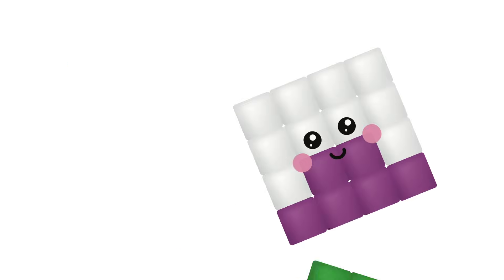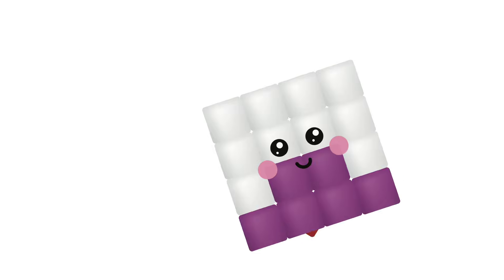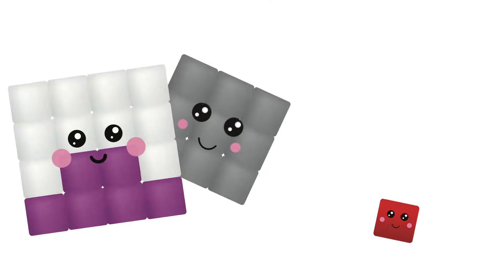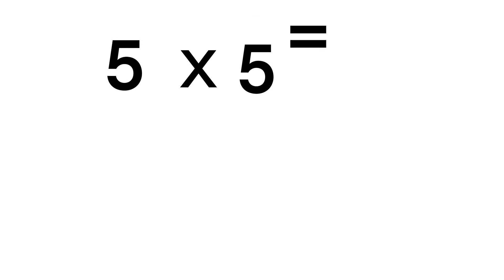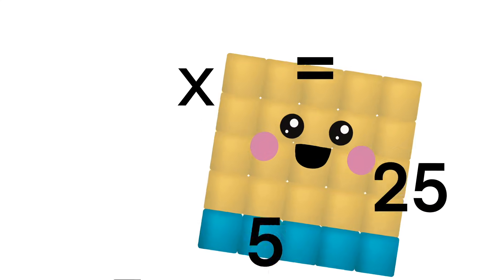It's the square numbers, multiplying is the key. It's the square numbers, come count with me. 5 times 5 equals 25, see the numbers come alive.